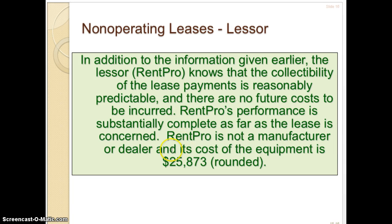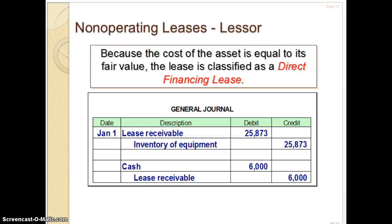RentPro is not a manufacturer or dealer — and that's important because that determines whether it's a direct financing lease or a sales lease. Since RentPro is not a manufacturer or dealer and the cost of its equipment is $25,873, you're dealing with a direct financing lease. It's kind of like a loan — they're not selling it, they're just leasing the equipment. They are still making money from interest, but they're not selling it as well. Their journal entry is a lease receivable for the full amount, and they credit inventory of equipment, taking it off their books.